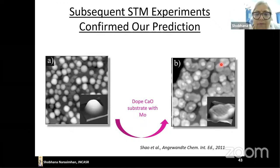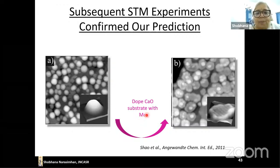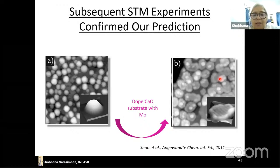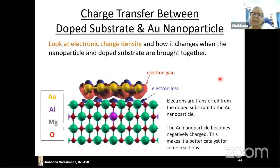We made this theoretical prediction, and shortly after, within a few months, the group of Freund in Berlin did the experiment. They used a slightly different system: gold nanoparticles on calcium oxide instead of magnesium oxide, with molybdenum as dopant instead of aluminum. Their scanning tunneling microscope images showed that without doping the support you get 3D-shaped nanoparticles, but when you dope the support they become flat — pancake-like, like chapatis. This also works for larger nanoparticles, not just 20-atom ones.